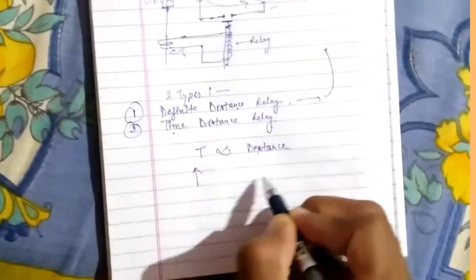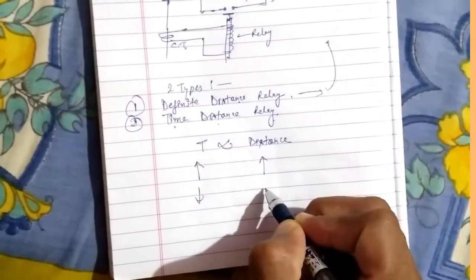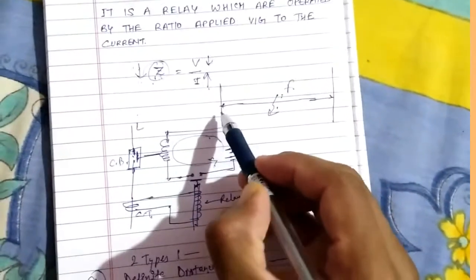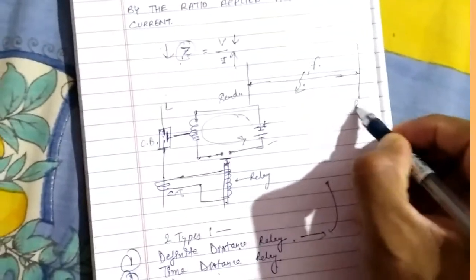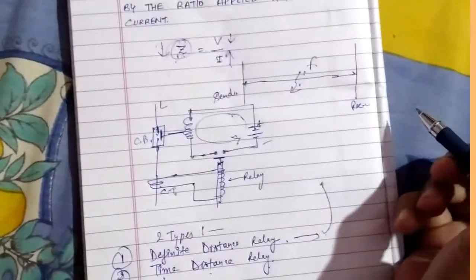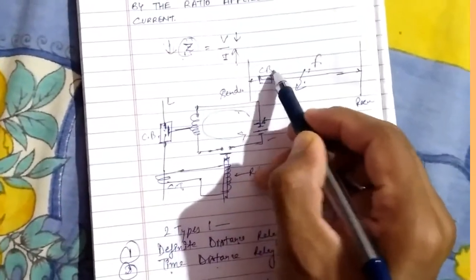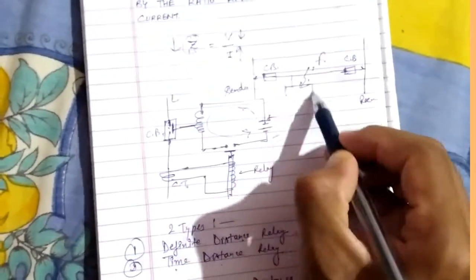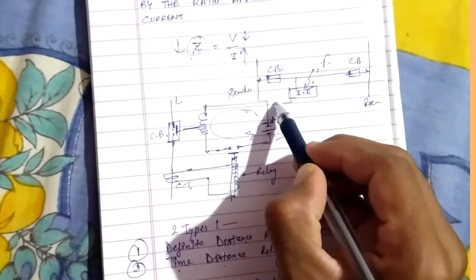Higher the time, higher the distance; smaller the time, smaller the distance. This is the sending end and this is the receiving end. Here is the circuit breaker and here is the impedance relay.